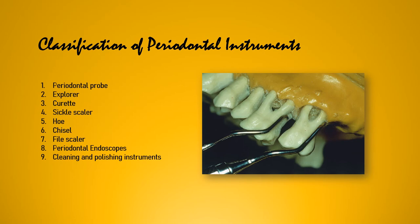Let's talk about the classification of periodontal instruments. The various types used in dentistry include: periodontal probe, explorer, curette, sickle scaler, hoe, chisel, file scaler, periodontal endoscopes, and cleaning and polishing instruments. In this picture there is a curette, probably a Gracey curette.